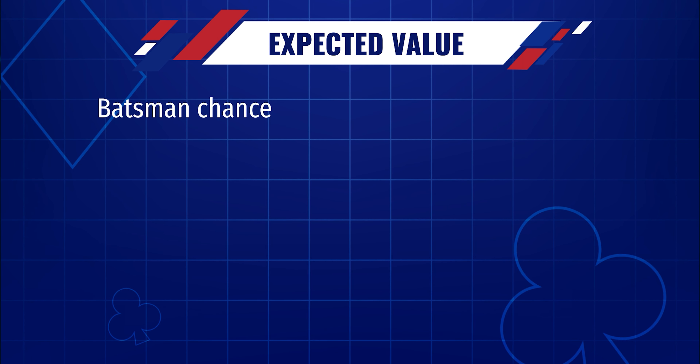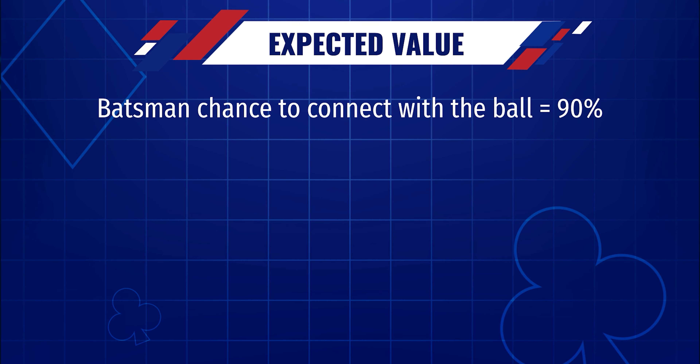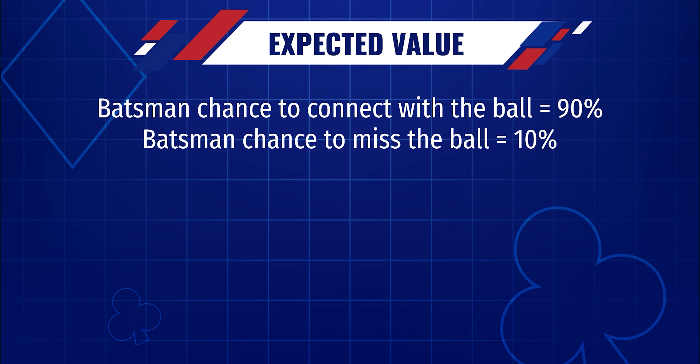Let's start with a small example from cricket. Suppose you are watching a renowned batsman doing some batting practice in the nets. The batsman turns to you and proposes a hundred rupee bet that he will connect with the ball on the next shot. You already know that this is a bad bet for you because that batsman is known for his impeccable strike rate. But let's look at it in mathematical terms: 90% of the time the batsman will connect with the ball, and 10% he will miss because of a wide, etc.